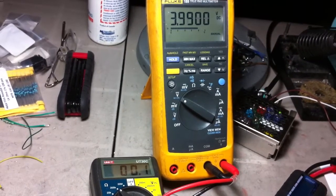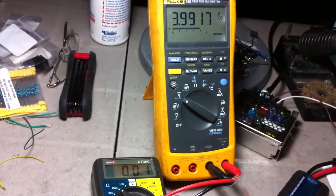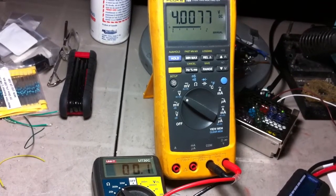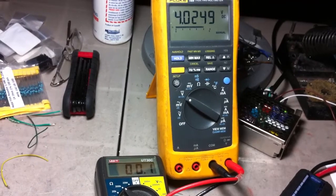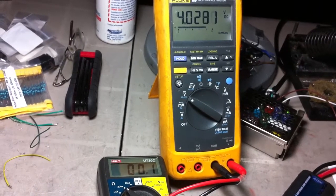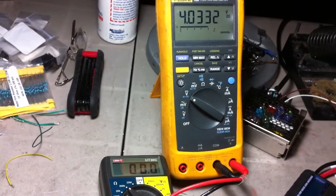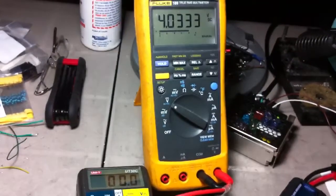I'm going to keep going because it hasn't gone to zero yet. It's very close. There we go - 4.3 volts. This switch has switched over.